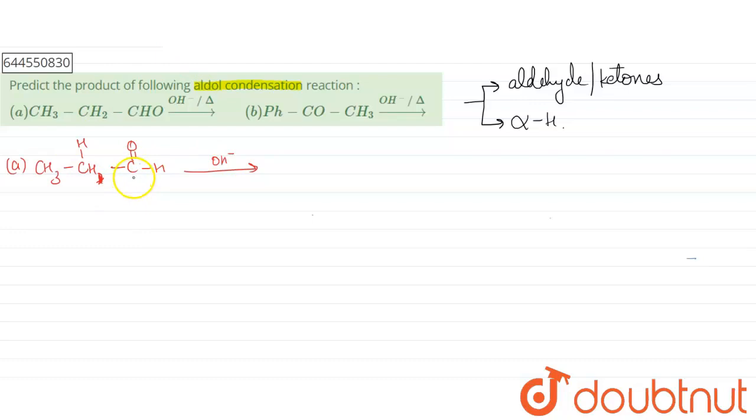This is the functional group and this carbon is the next one carbon, so this is the alpha carbon and this is our alpha hydrogen. So this will attack on this and it gets separated as water molecule.